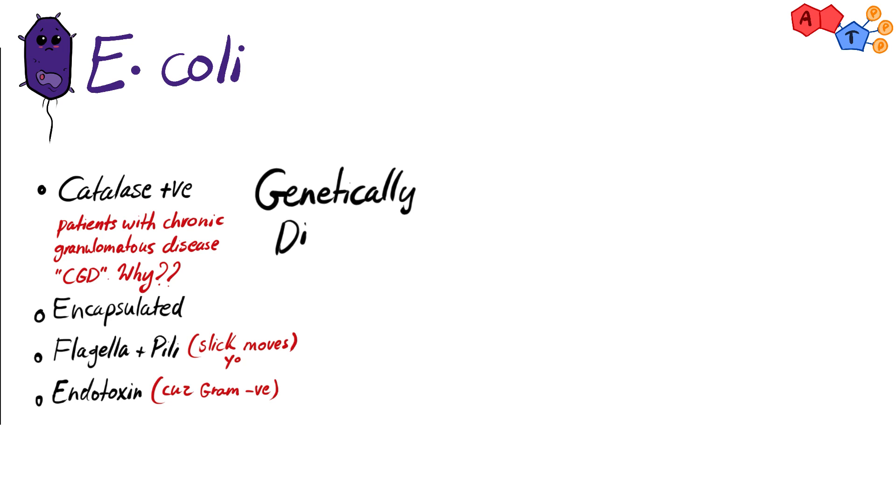And also E. coli is very genetically diverse and can be differentiated into serotypes based on differences between three antigens. The first antigen is O antigen, which is related to the lipopolysaccharide. And remember from our introduction to microbiology that all gram-negative bacteria has lipopolysaccharide in their outer membrane.